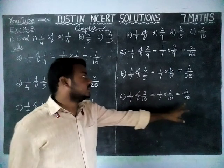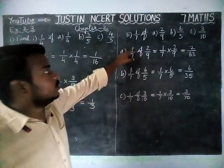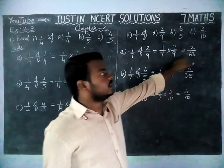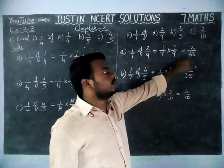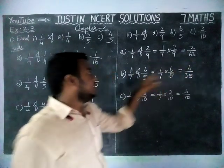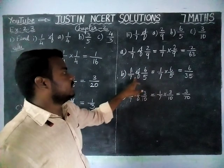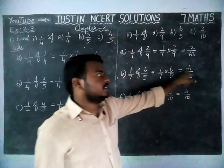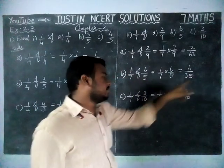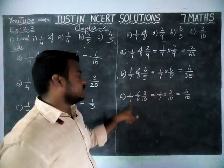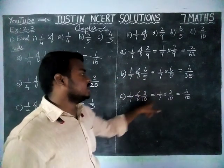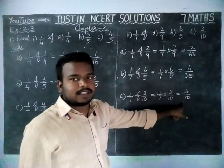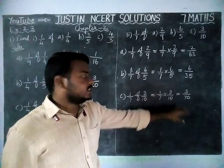So, this is all the answers: 1/7 of 2/9 is equal to 2/63, and 1/7 of 6/5 is equal to 6/35, and 1/7 of 3/10 is equal to 3/70.